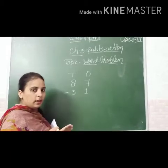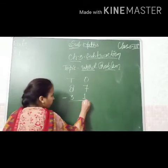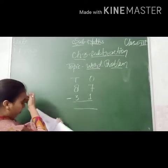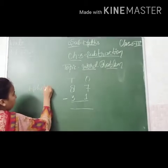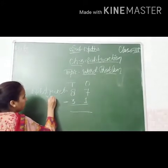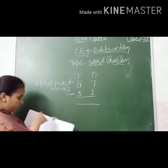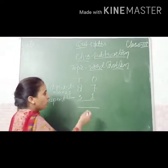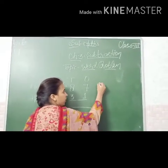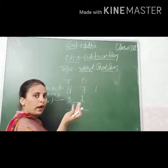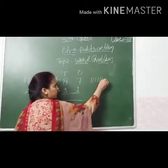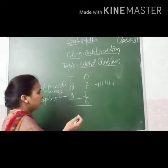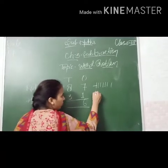So, minus. Rohit got Rs. 87, okay? And he spent Rs. 31. Now we will look at 7 minus 1. Kids, I have told you that we can count on our fingertips. So 7, and we count: 1, 2, 3, 4, 5, 6, 7. In the ones place, we will also draw 8 lines.